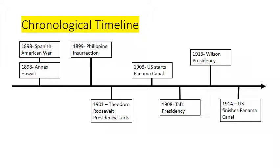Timeline: 1898 — the Spanish-American War and the annexation of Hawaii, all under President McKinley. After the war, the Filipinos rose up against their new occupiers and fought an insurrection against the United States for many years. Theodore Roosevelt started his presidency in 1901 following McKinley's assassination. Two years later, work on the Panama Canal began. 1908 was Taft's presidency; 1913 started Wilson's. In 1914, thirteen years later, one of the greatest engineering feats in American history — the United States finished the Panama Canal.